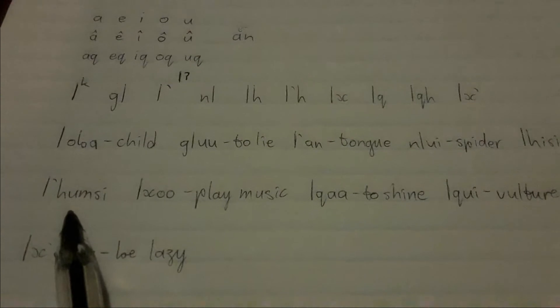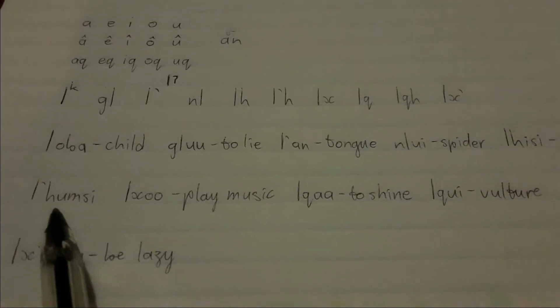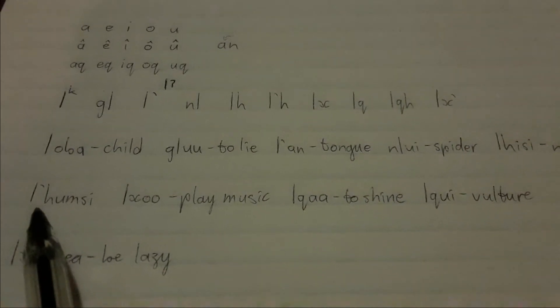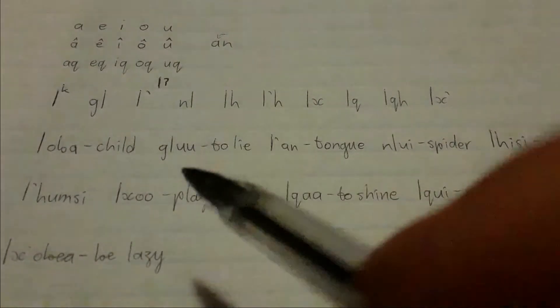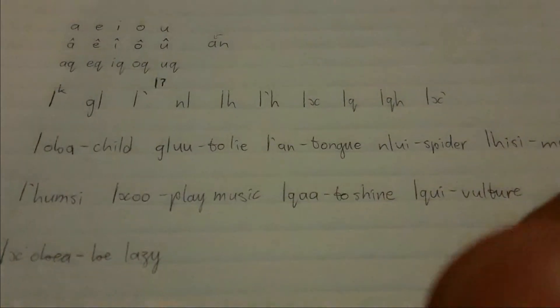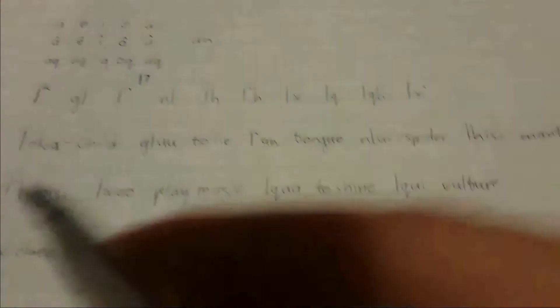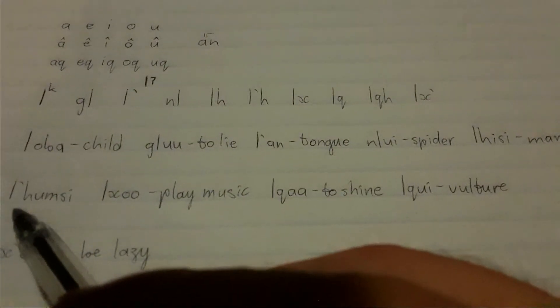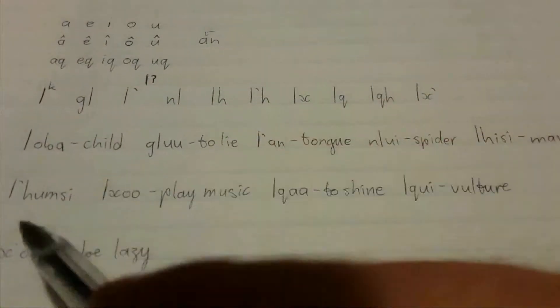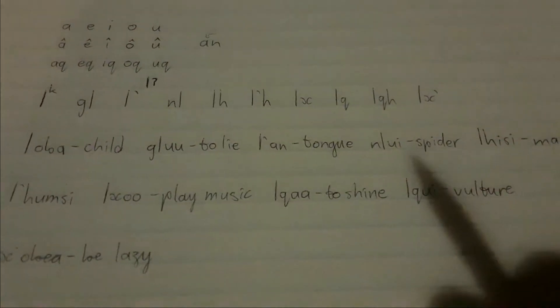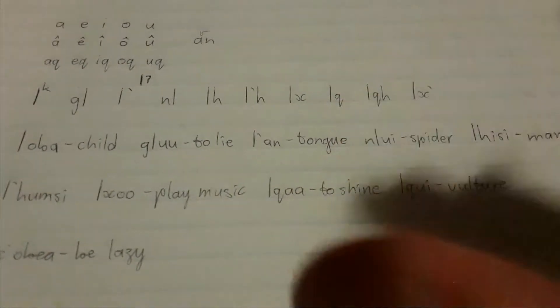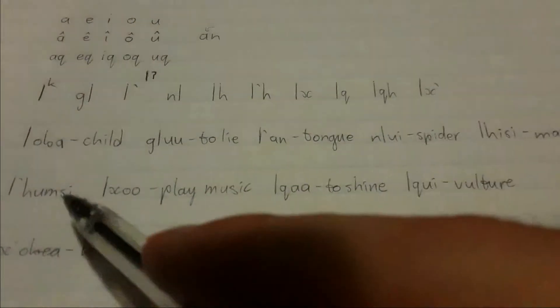The next one is called the delayed aspiration click, where you pronounce the click, and then there's a small delay, and then you pronounce an H. So you pronounce the click, then a small rush of air after it, and then a little delay. I forgot to translate that one — this word means a soul.